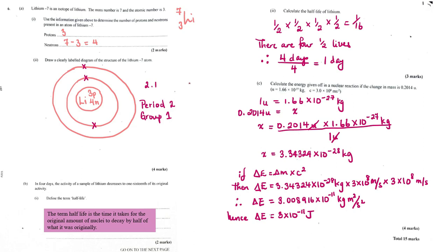The second energy level holds a maximum of 8, the third a maximum of 8, the fourth a maximum of 18. This follows the periodic table — if you count across the periodic table, the first row has 2, giving 2 electrons in the first energy level.